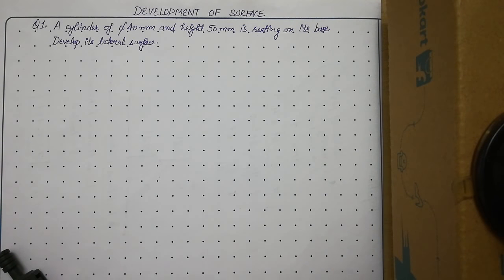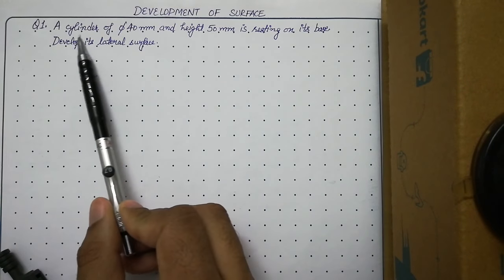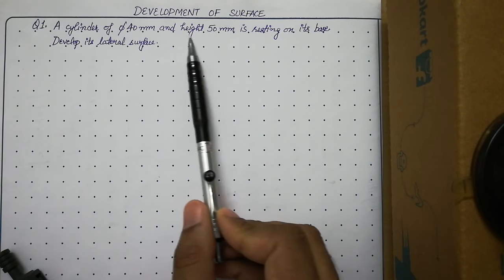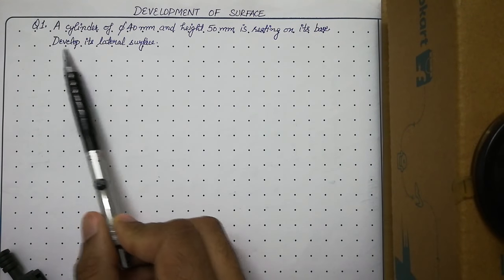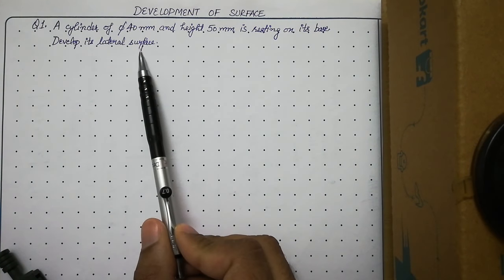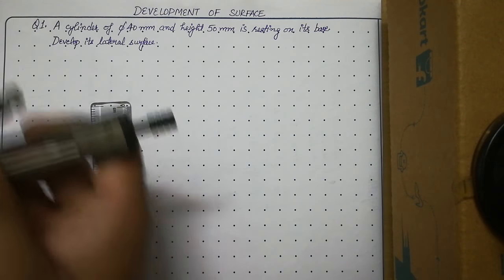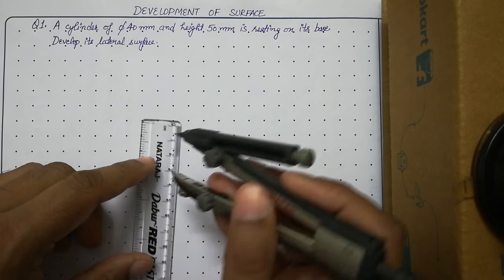Hello students, today we will talk about the first question of development of surface, and the question is related to a cylinder. A cylinder of diameter 40 mm and height 50 mm is resting on its base — develop its lateral surface. Let us quickly see the procedure we have to follow in order to solve the problem of development of a cylinder.